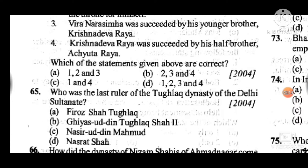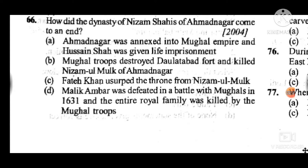Question 65: Who was the last ruler of the Tughlaq dynasty of the Delhi Sultanate? Answer is C: Nasiruddin Muhammad. Question 66: How did the dynasty of Nizam Shahis of Ahmadnagar come to an end? Answer to question 66 is A: Ahmadnagar was annexed into the Mughal Empire and Hussain Shah was given life imprisonment.